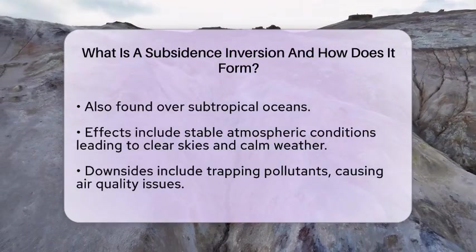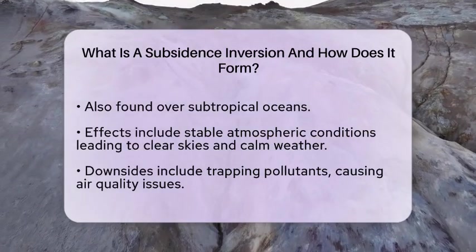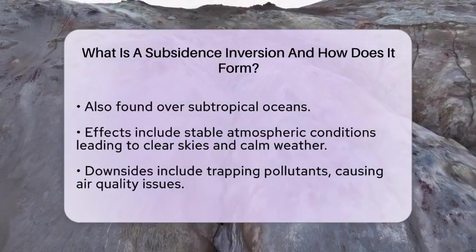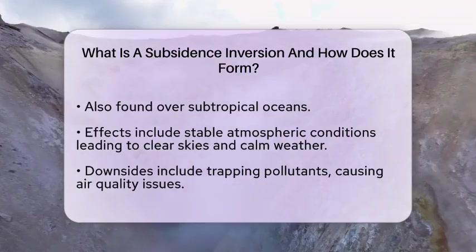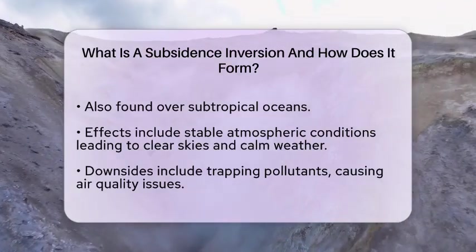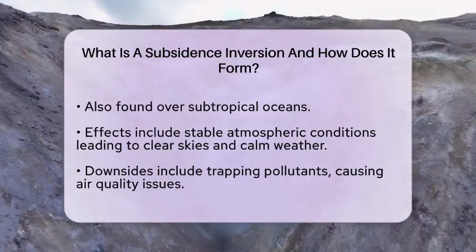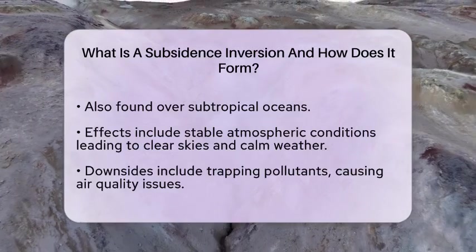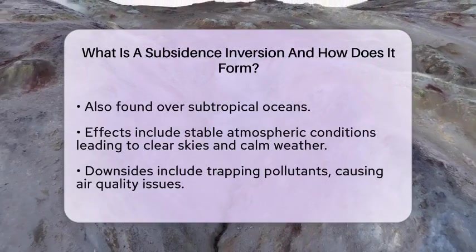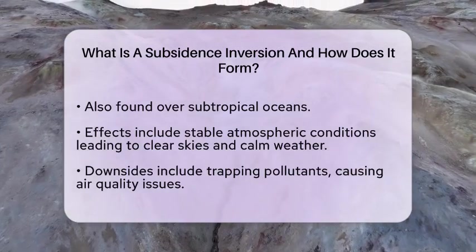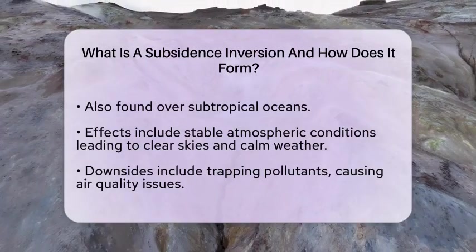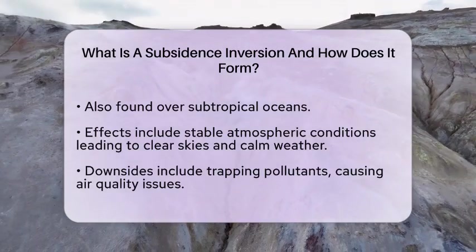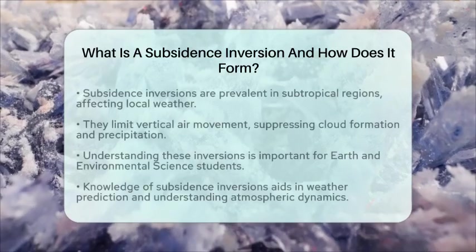In terms of climate, subsidence inversions are common in subtropical regions. They play a role in shaping local weather and climate conditions. Because these inversions limit the vertical movement of air, they can suppress cloud formation and precipitation.